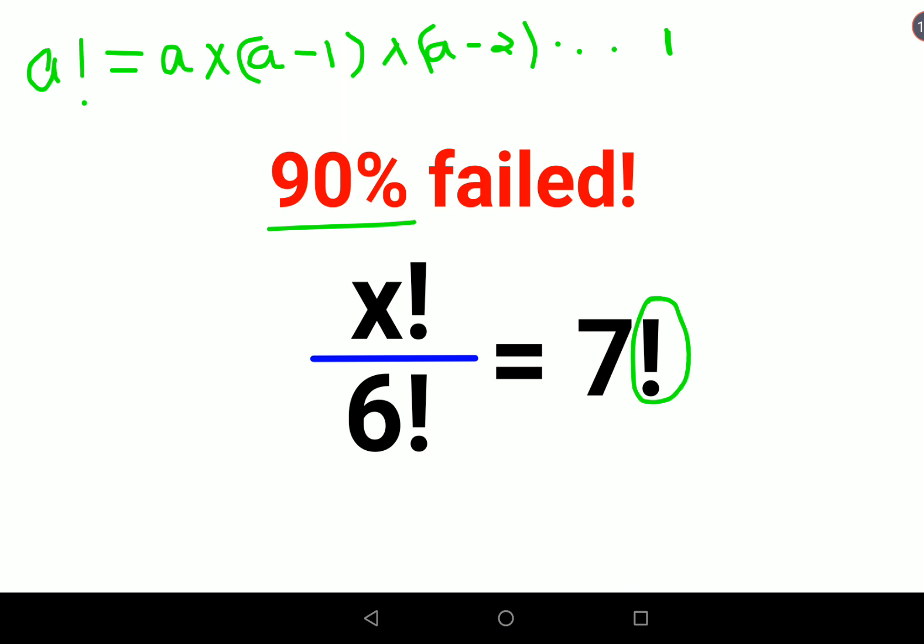Here, since we want to find the factorial of x, we will multiply both sides by 6!. So you are left with 7! × 6!. Now let's understand how we do this. x! is equal to 7! × ...